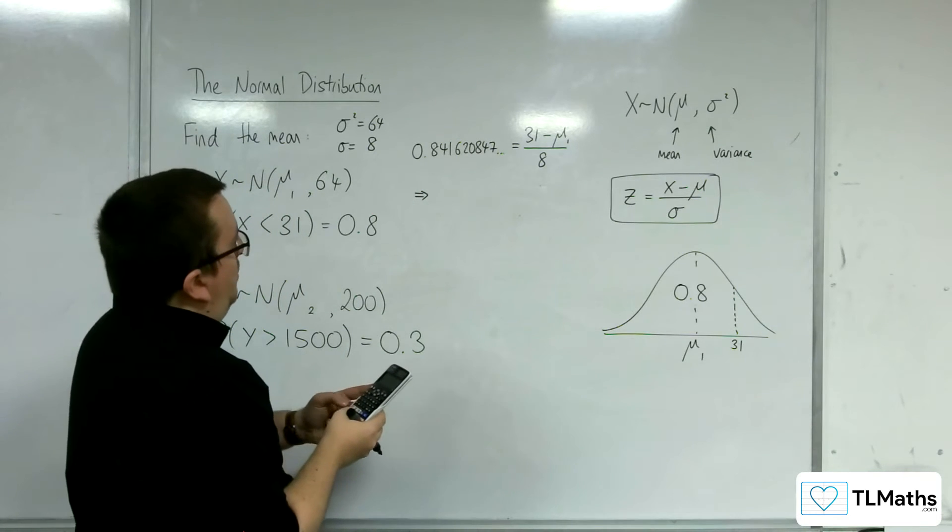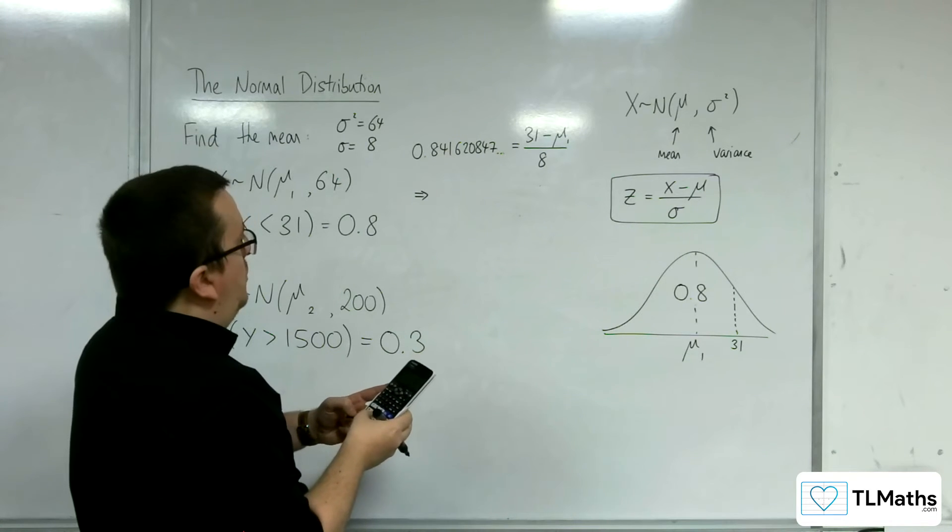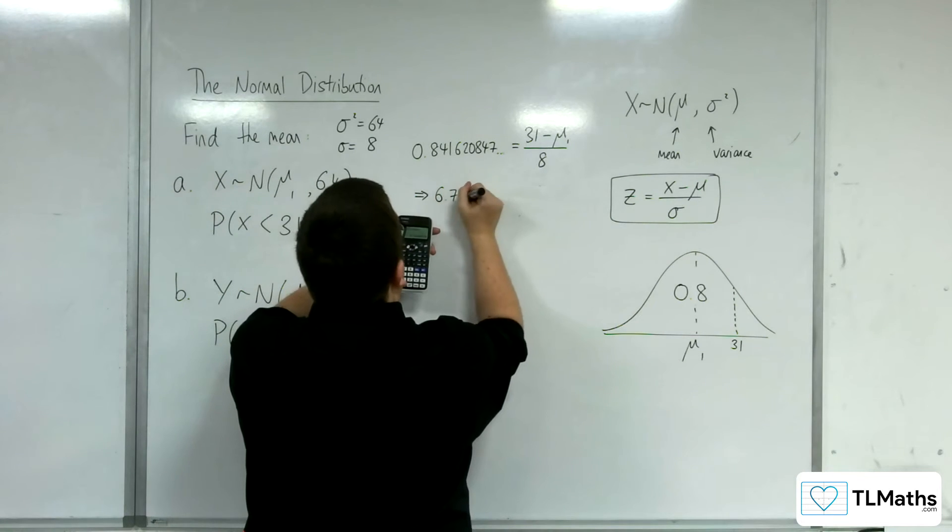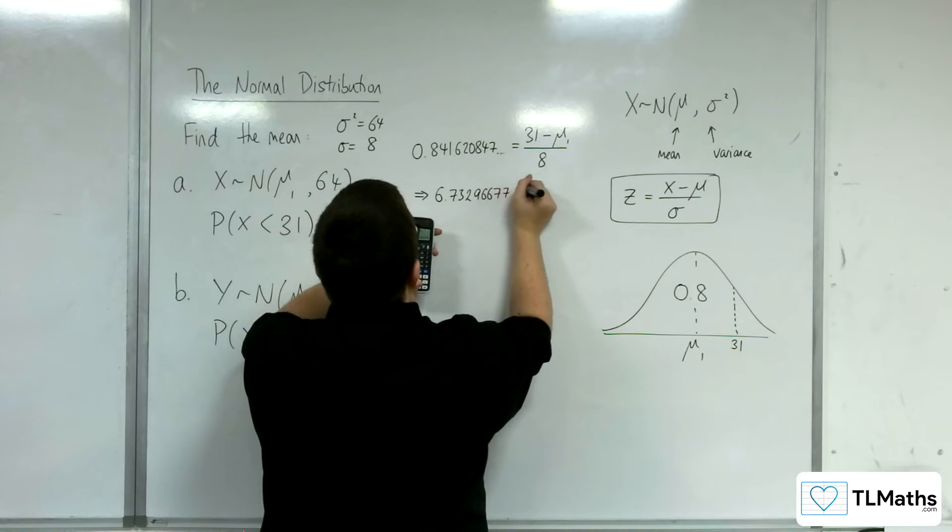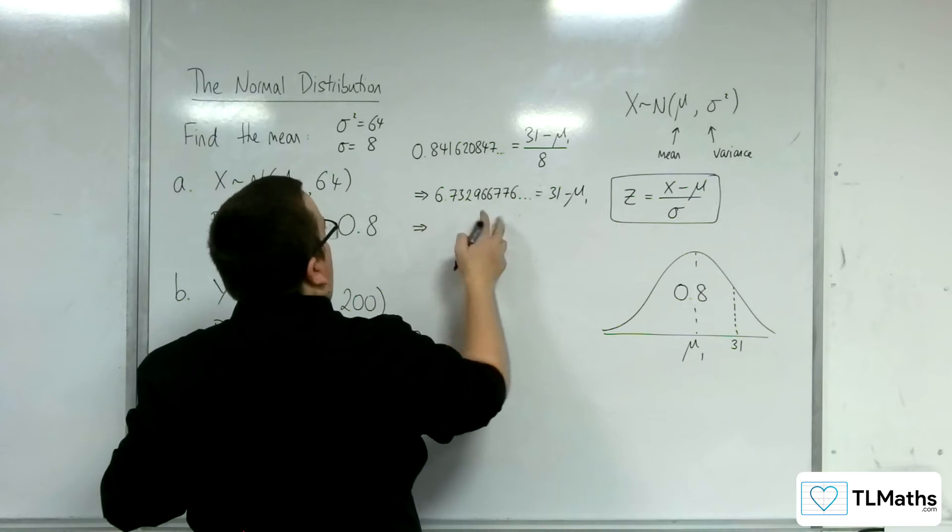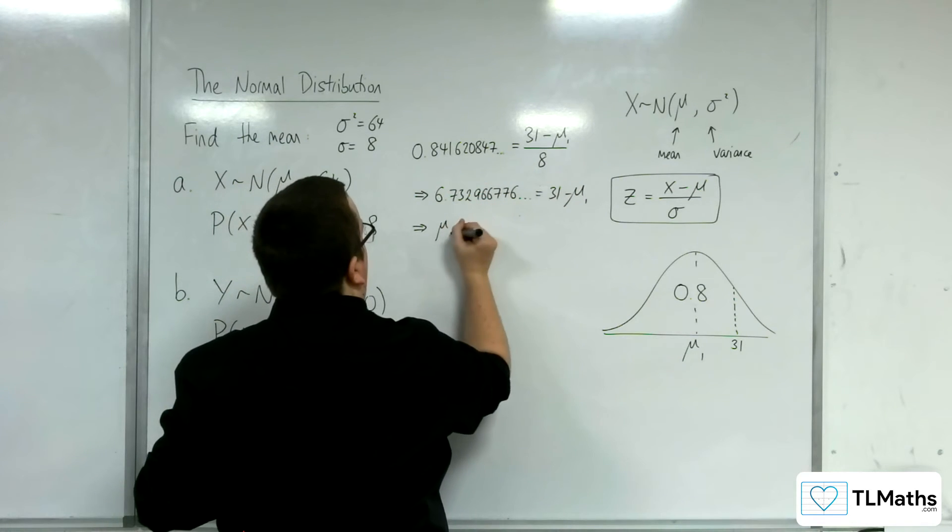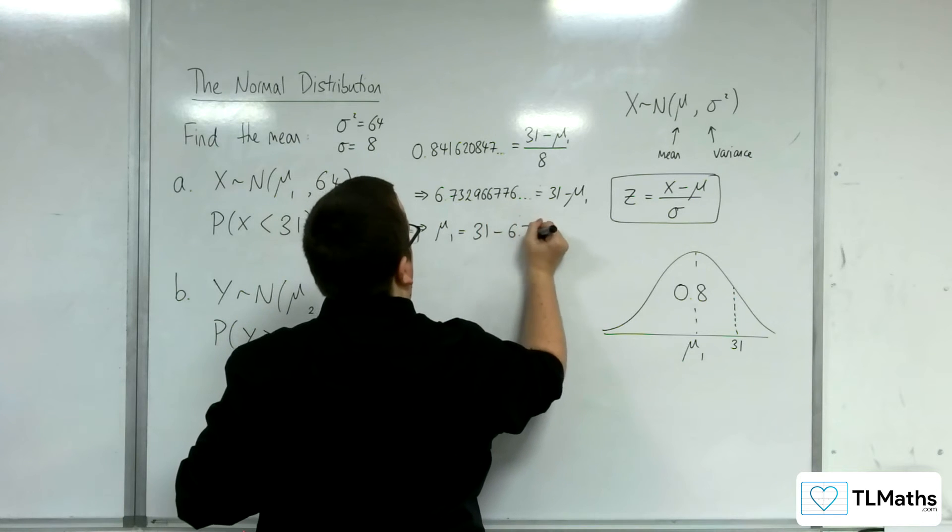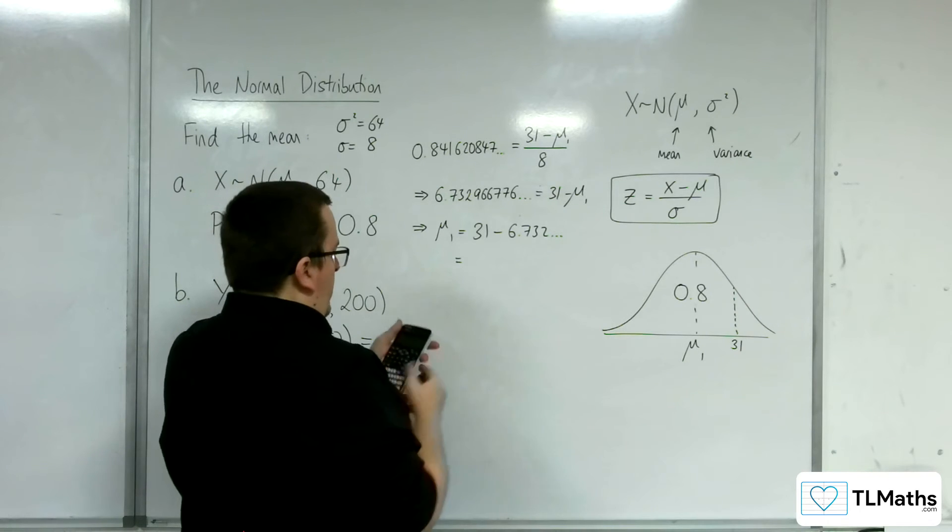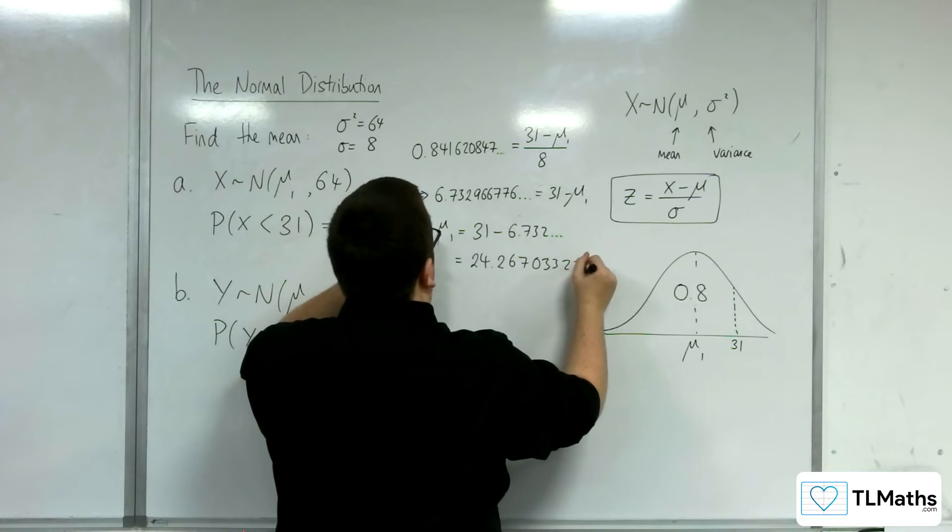I'm going to have to multiply up by the 8. So 8 lots of 0.841620847 is 6.732966776. If I subtract that from that side and add mu1 to both sides, I can rearrange this.